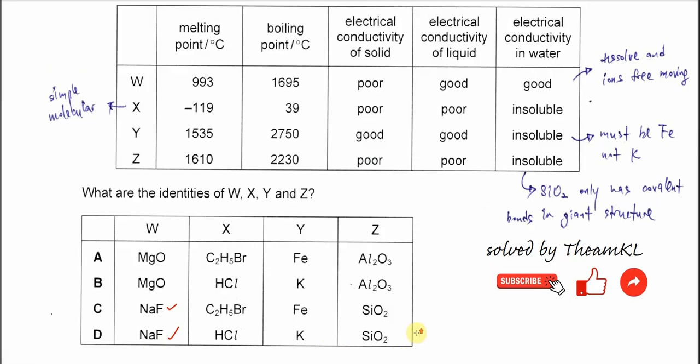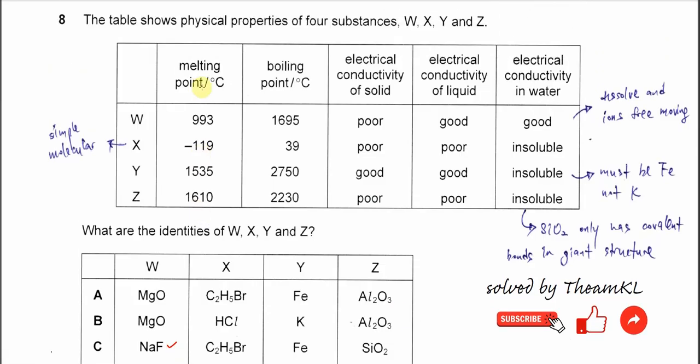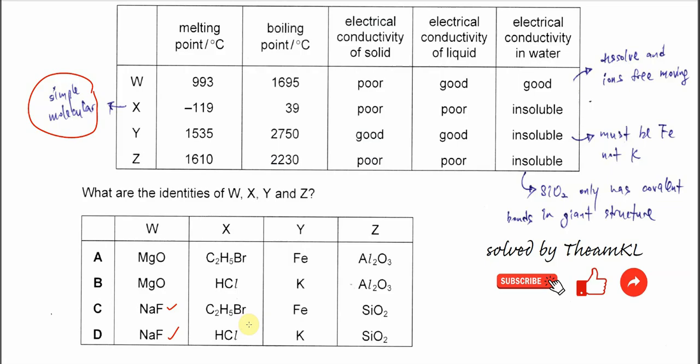And let's look at X. X melting point and boiling point is quite low. So from here, we know it's a simple molecular structure compound. So from here, we still cannot decide because X in this C and D is diboroethyl and HCl. So both are simple molecular structure, so the boiling point and melting point is not too high.